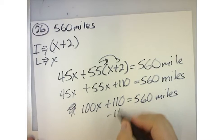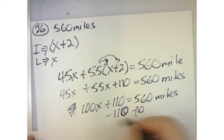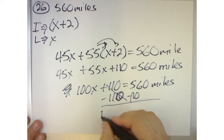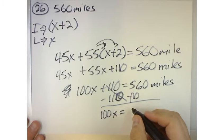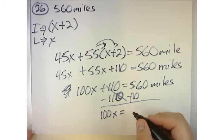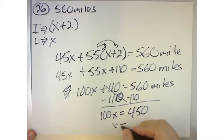Plus 110 is equal to 560 miles. So if you subtract 110 from both sides, these cancel and I get 100X is equal to 450, or X is equal to 4.5.